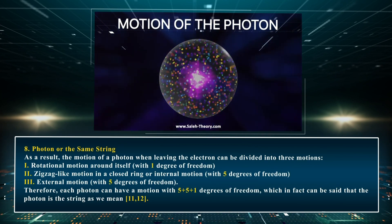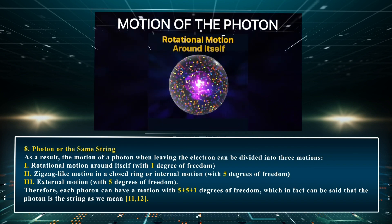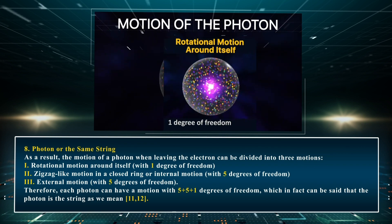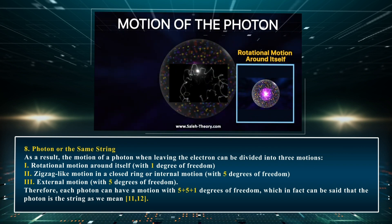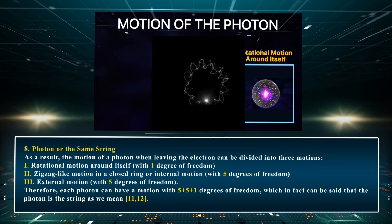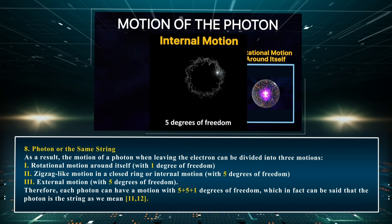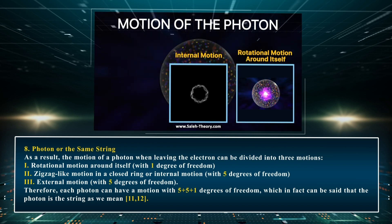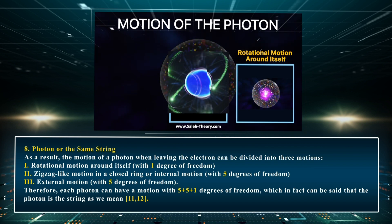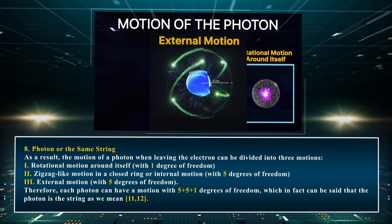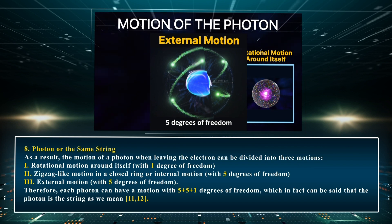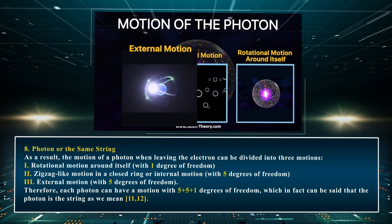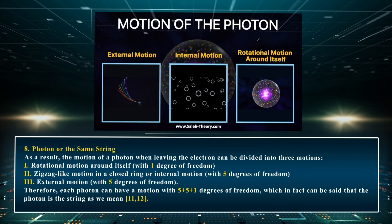Photon, or the same string. The motion of a photon when leaving the electron can be divided into three motions: 1. Rotational motion around itself, with one degree of freedom. 2. Zigzag-like motion in a closed ring, or internal motion, with five degrees of freedom. 3. External motion with five degrees of freedom. Therefore, each photon can have a motion with five plus five plus one degrees of freedom, which means the photon is the string as we mean.